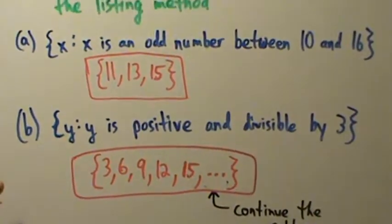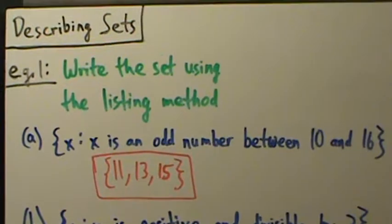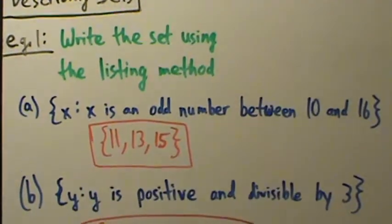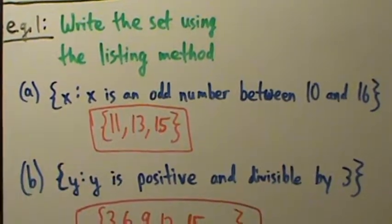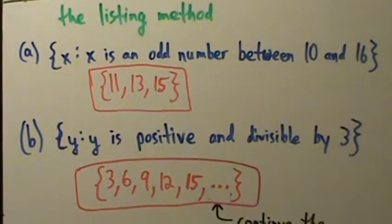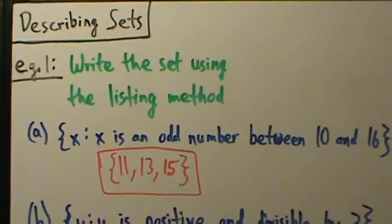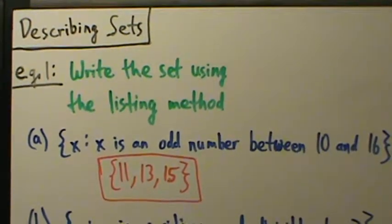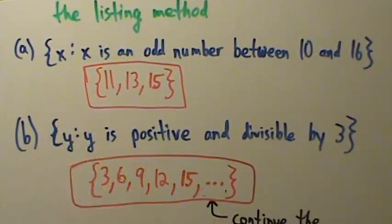So that's two quick examples of describing sets, or converting, basically, from set builder to the listing method. Coming up next, we'll go the other way around, pretty much. So that's two quick examples here, and here's the answers again. Thank you.